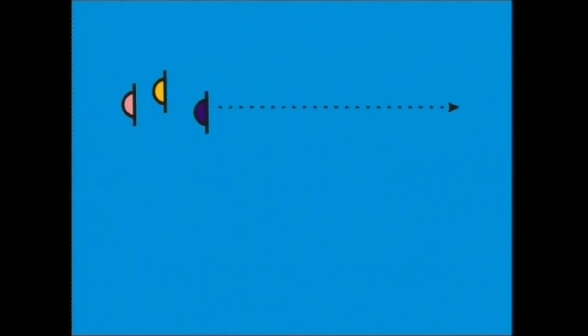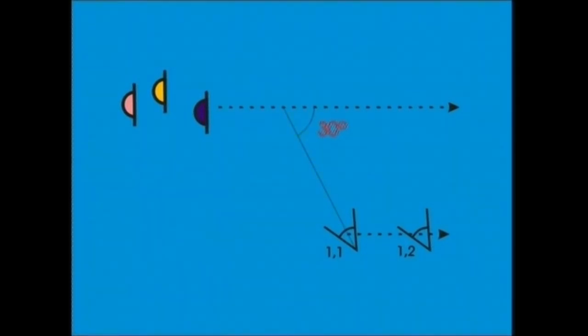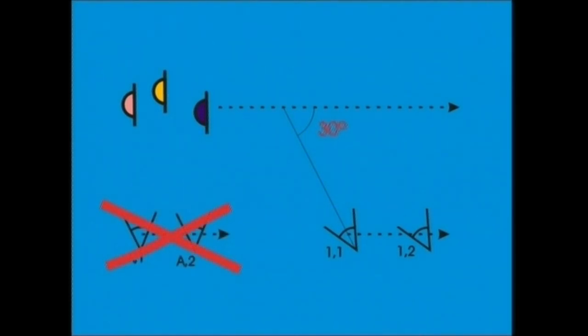Zuzen-zuzen doazen aktoreak travelin baten bidez hartu nahi ditugunean, kameraren ardatza aktoreenaren gandik hogeita hamar gradu aldenduta izango dugu. Inoiz ez dugu jarri behar kamera aktoreekiko angelu zuzenean edo paraleloki.